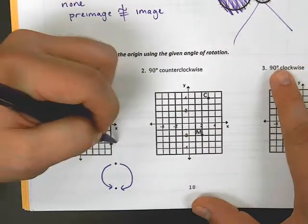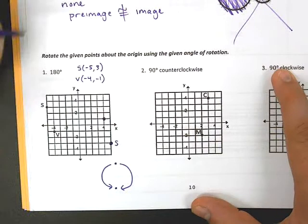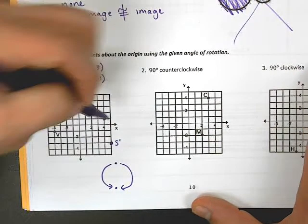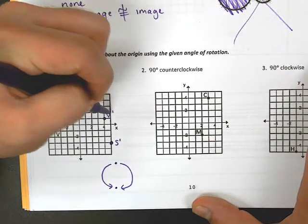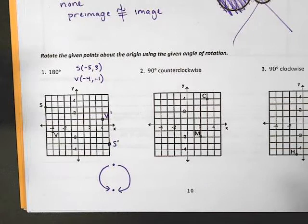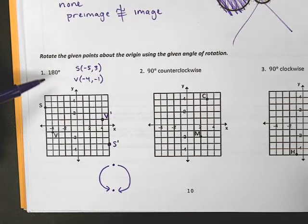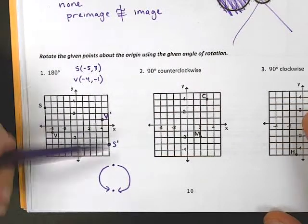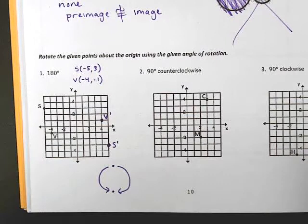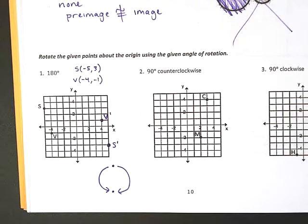Once I have the points plotted, I would turn my paper around and label. This point was S, but remember, it's the image of the pre-image. So, I have to put a prime, and this is V prime. So, again, the trick here, the steps, turn your paper the correct way, replot the points, and then label.